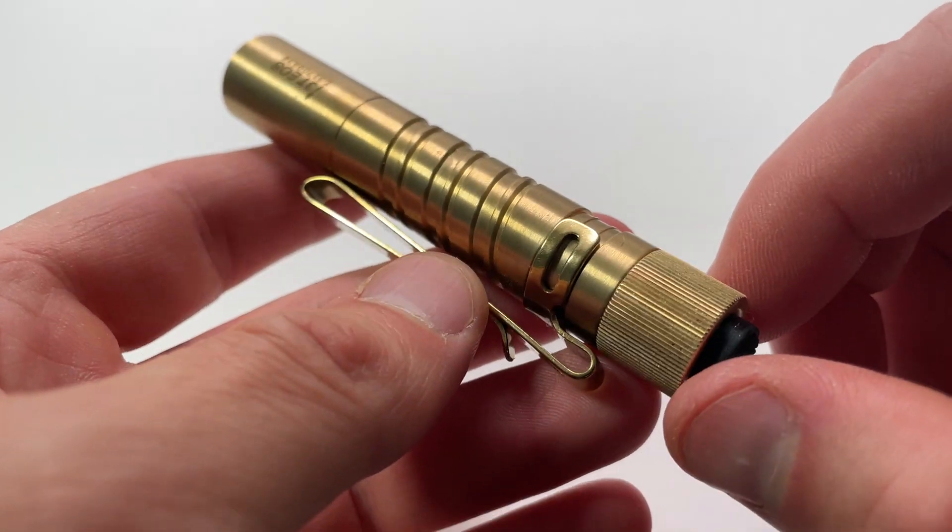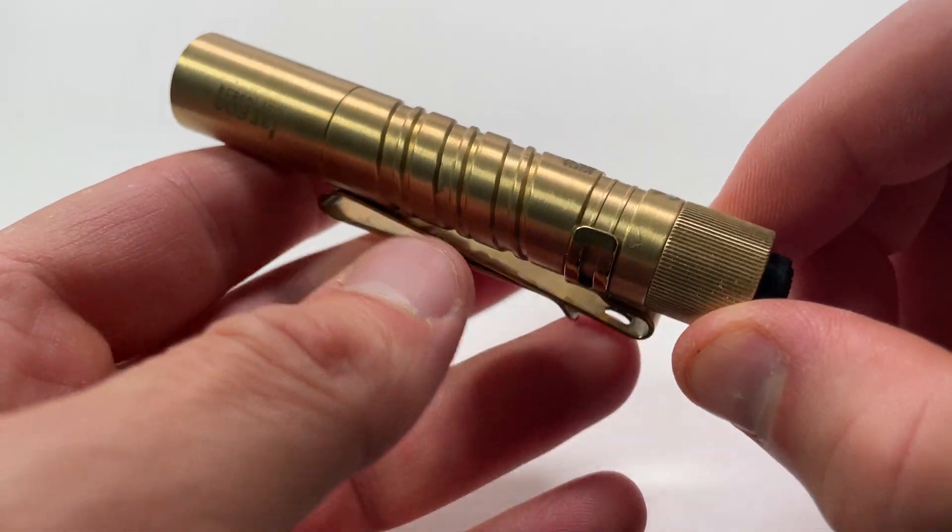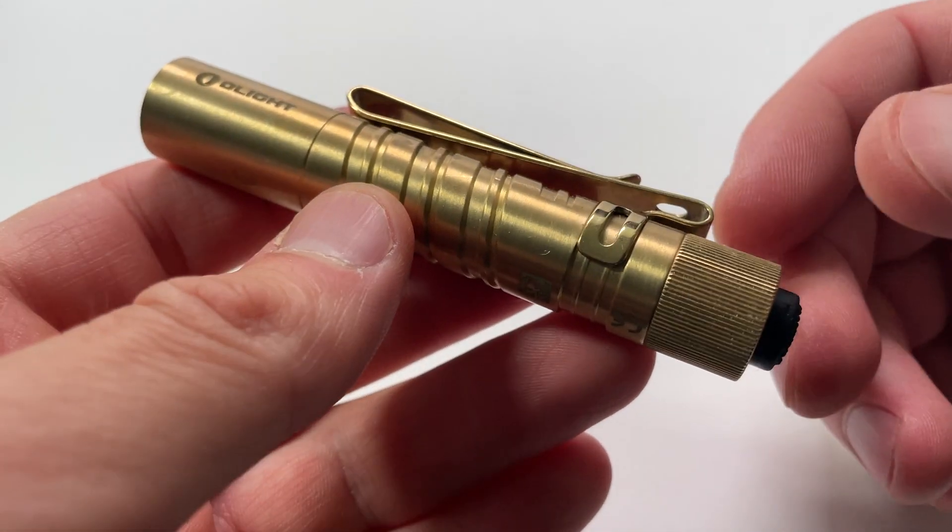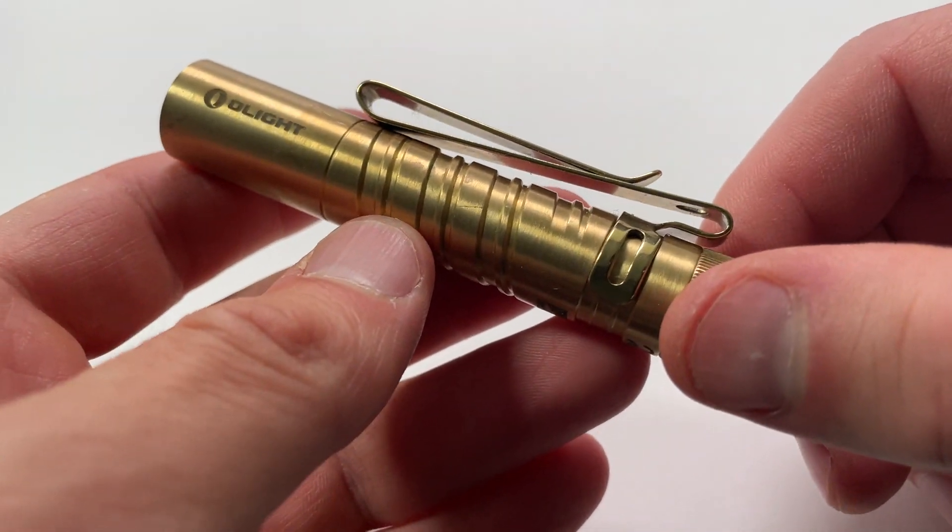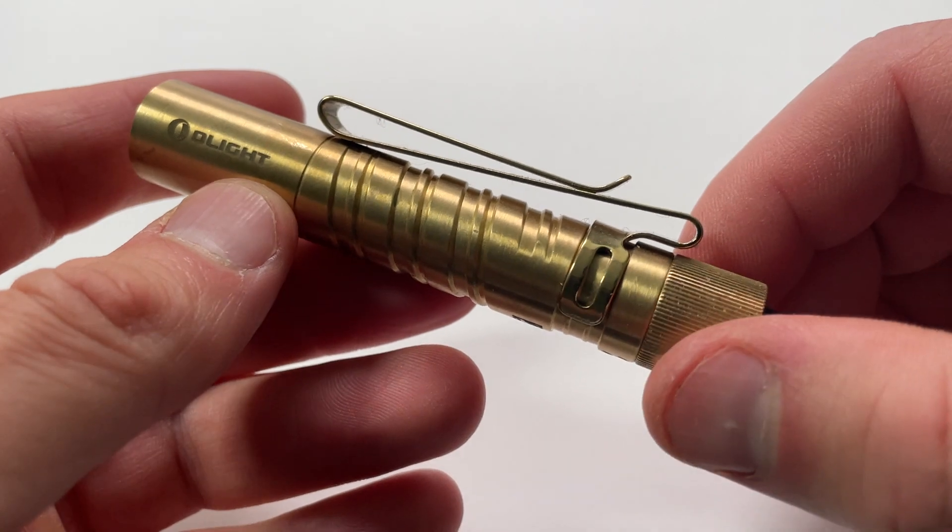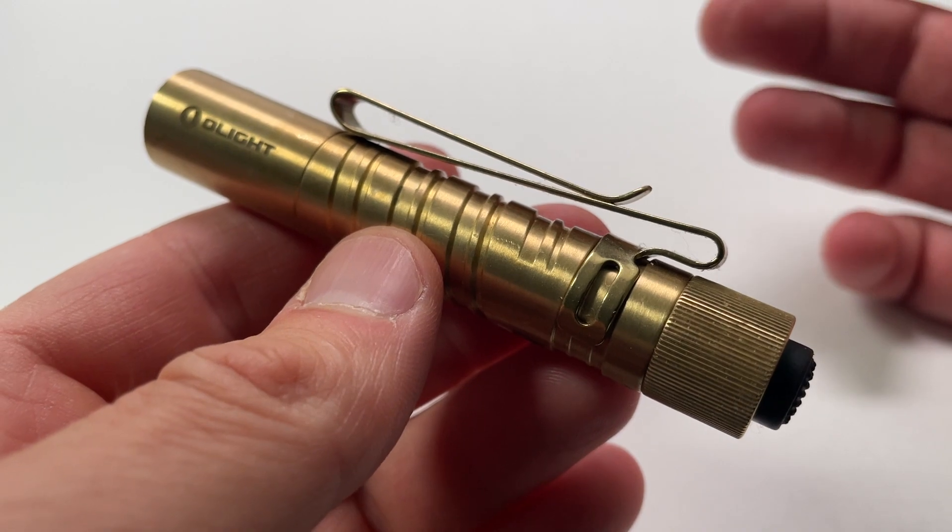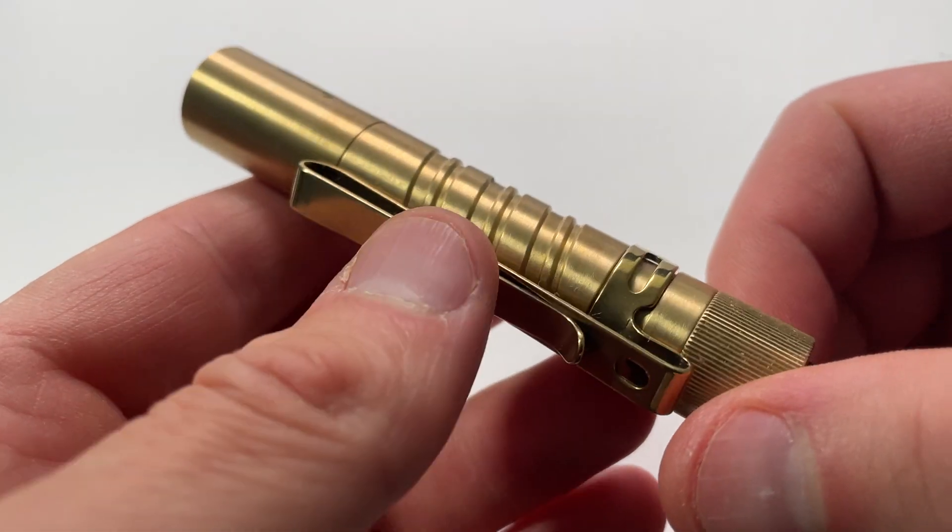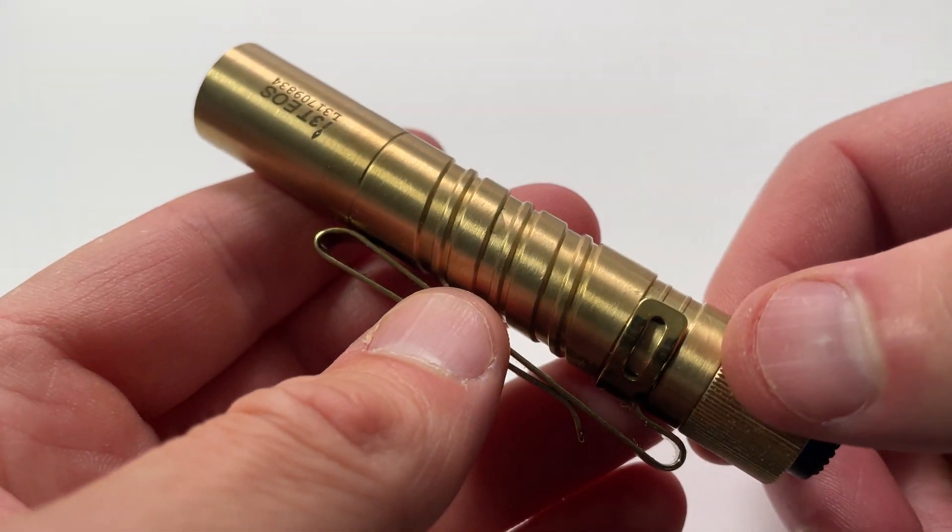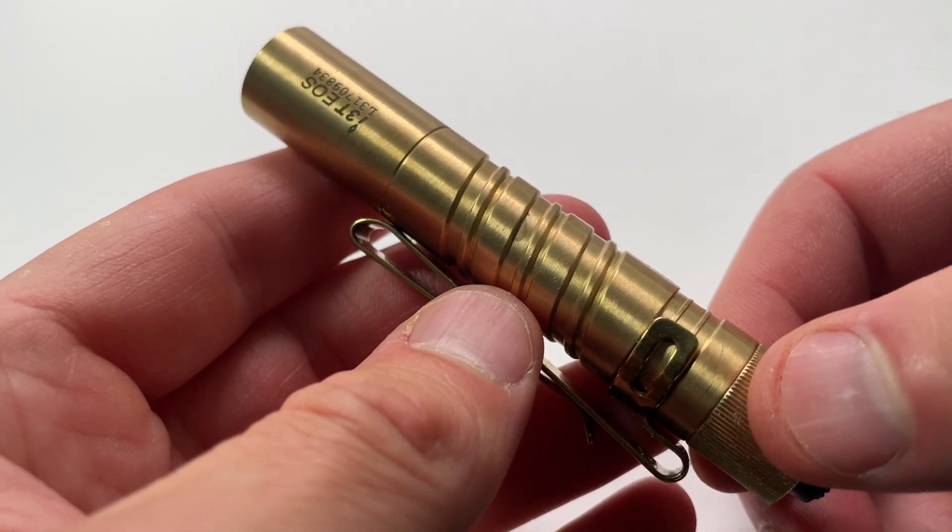And what you're getting for that is brass, which is nice and heavy. It feels really nice in your hand, and it will patina over time. So it'll kind of change color, it'll look weathered, aged, whatever you want to call it. But it is gold out of the gate, and it'll get darker over time.